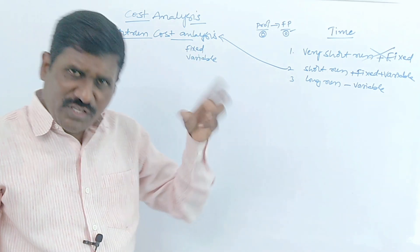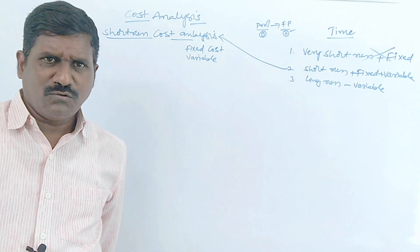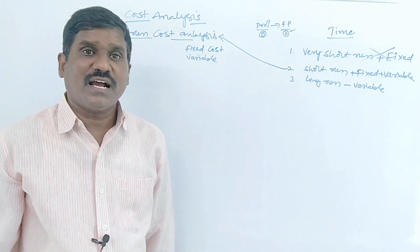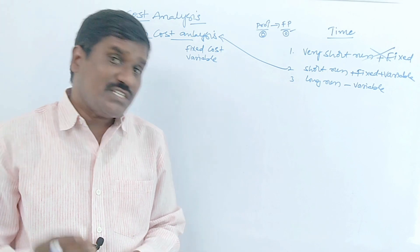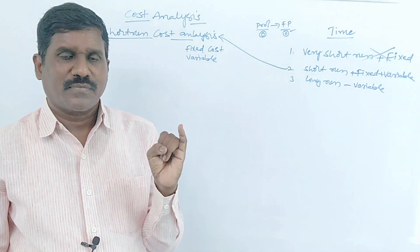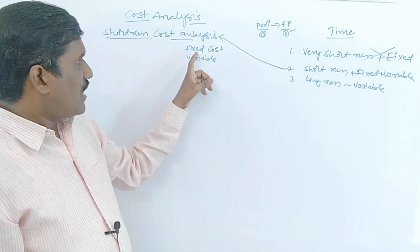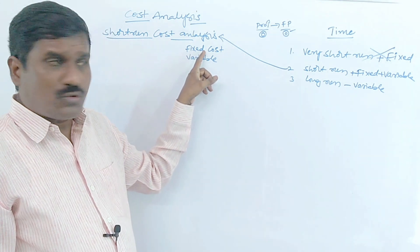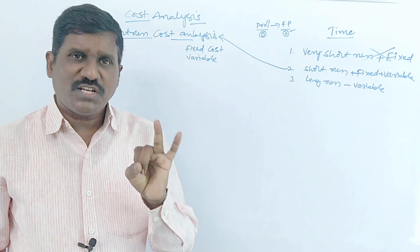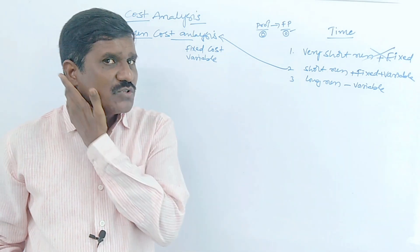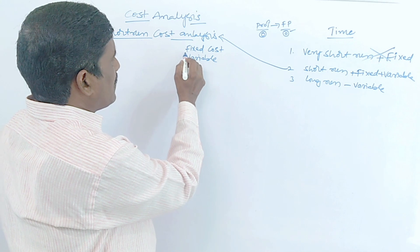The expenditure on fixed factors is called fixed cost. For example, to produce goods and services, we need fixed factors such as land, buildings, machinery, machinery equipment, and plants. To produce goods and services, we have to purchase land, machinery, and tools — the cost incurred on these fixed factors is called fixed cost.